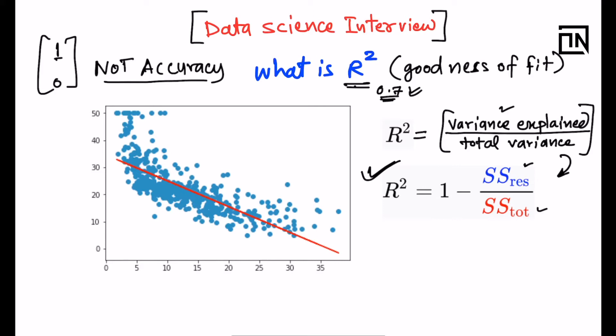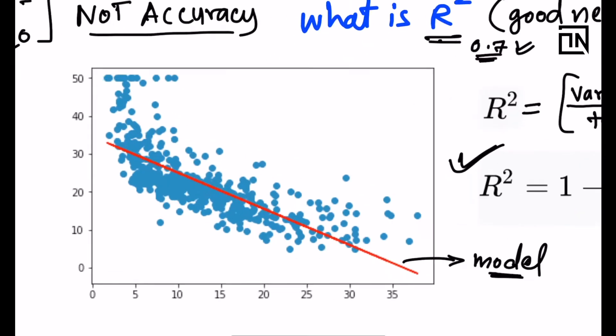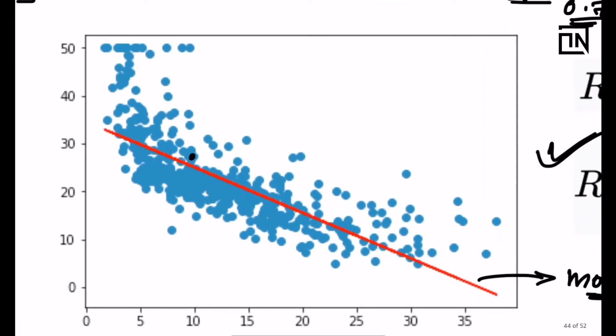What do we mean by variance explained? Consider a plot showing a linear model — a red line — passing through training data points. Points which are close to the line are getting explained by the model. We can see these are explained properly.